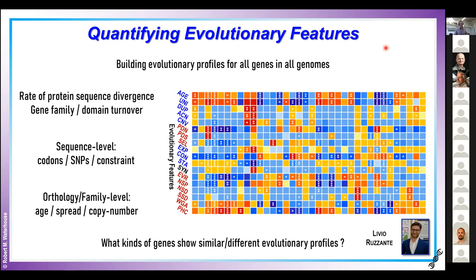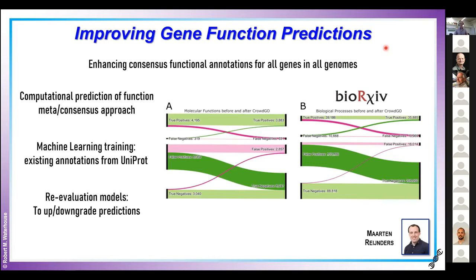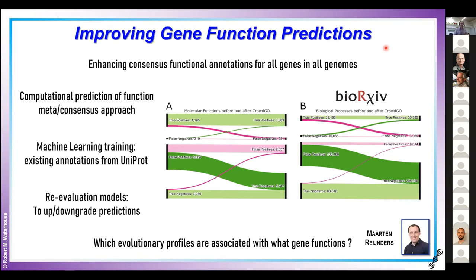Both of those questions ask what kinds of genes are constrained or not, and what kinds of genes show different evolutionary trajectories. To try to label what kind of genes these are, we're improving our understanding of gene function through improved functional predictions — a computational prediction of function rather than using functional genomics data. We're applying a consensus approach, building machine learning models trained on curated data from UniProt to reevaluate predictions from several different types of predictors and rescore them to be more confident in the ultimate gene ontology assignments.